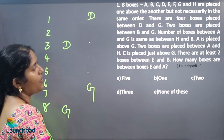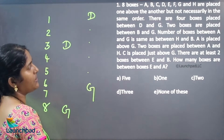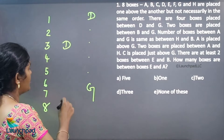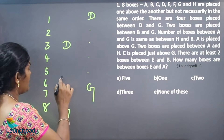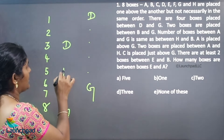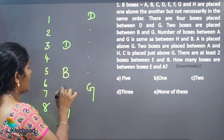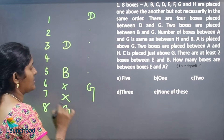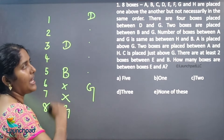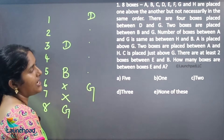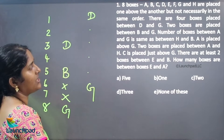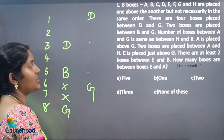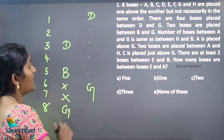2 boxes are placed between B and G. So if B is here, there are 2 boxes between B and G. After that, the number of boxes between A and G is the same as between H and B.